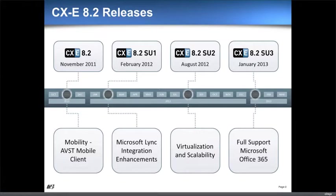So if you look at 8.2, it came out in November of 2011. Then we started doing software update releases, and you can see we've done three of them. Today we're going to talk very briefly about the new things that came out in Software Update 3, and then we'll go back and review all the different pieces to make sure everyone has a full understanding of what's been added to the product in the last year.